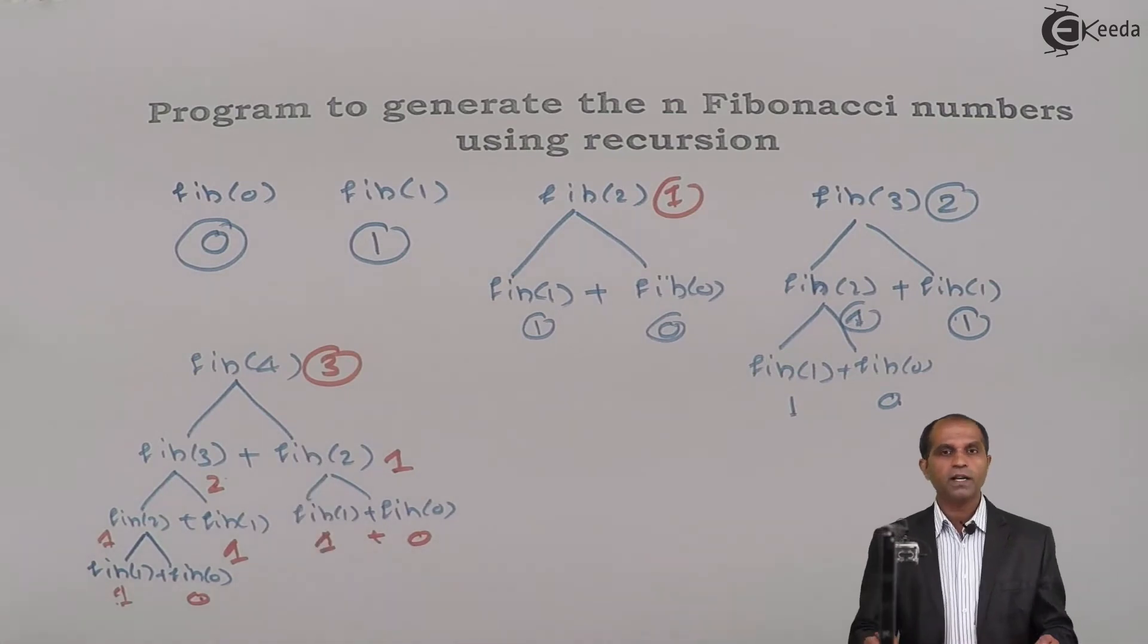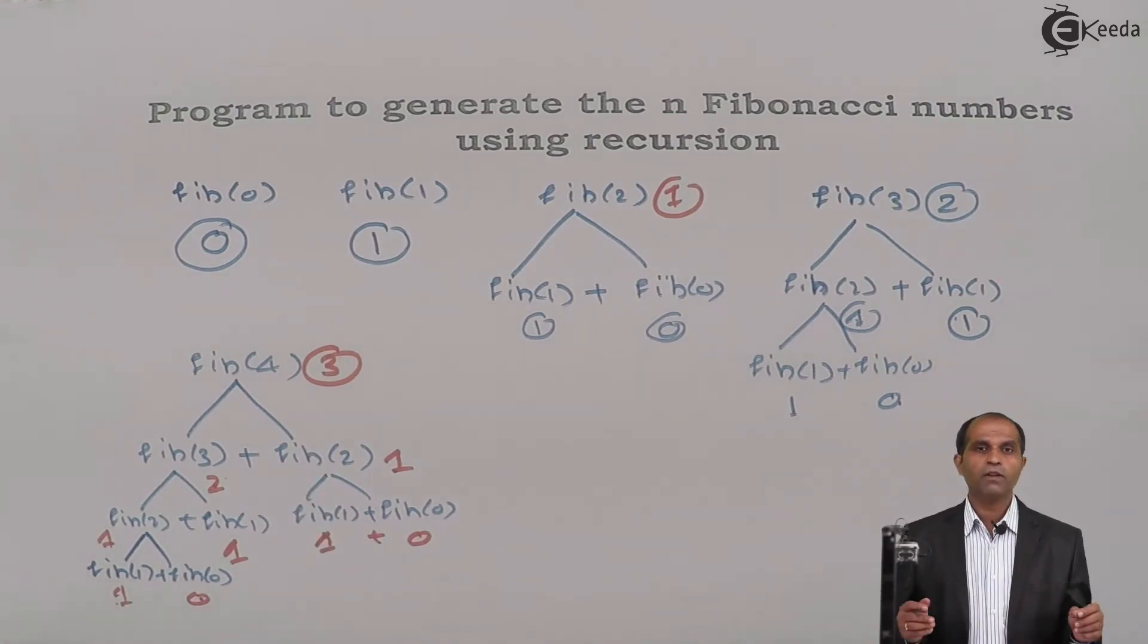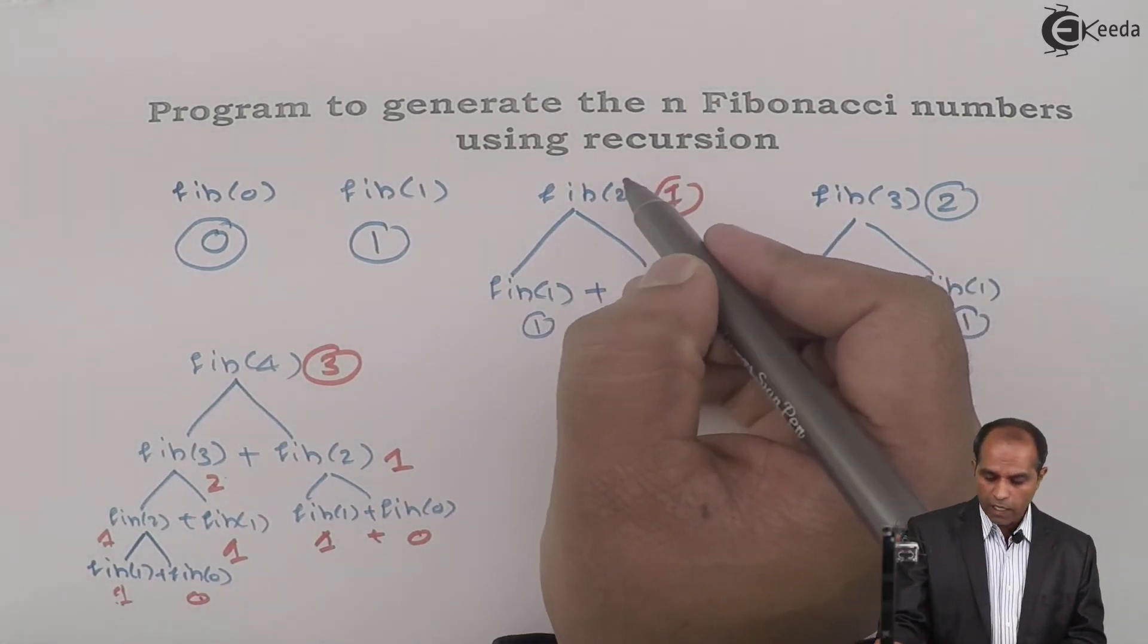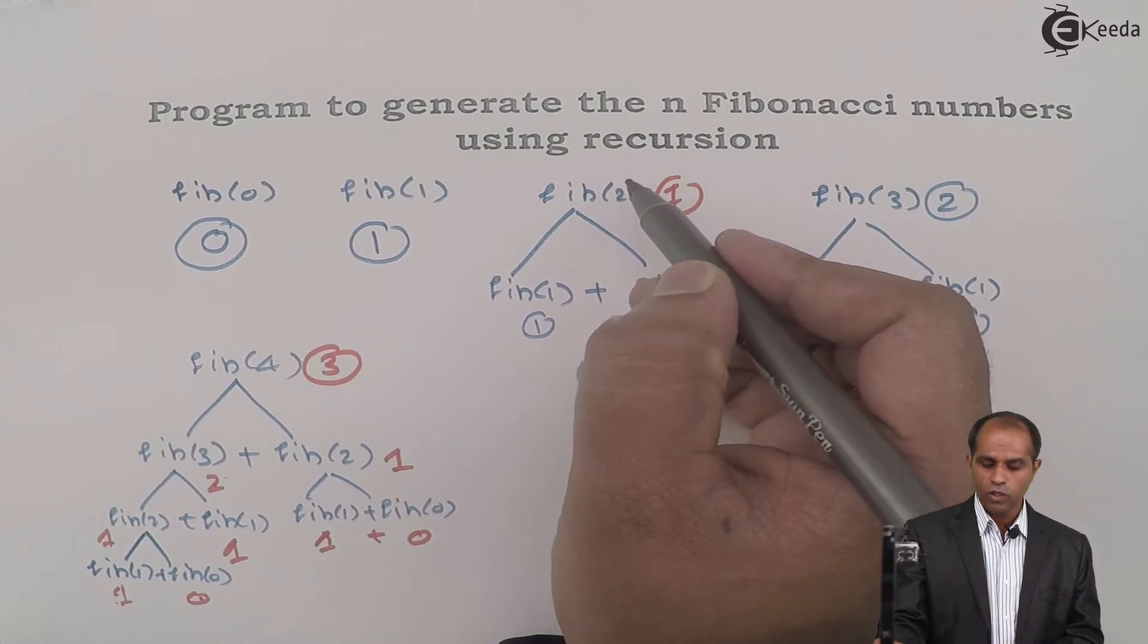We get this particular value. You can keep on expanding this particular tree to any level of your choice. Simple way to analyze: when I ask you to find Fib of n, when I give you a value n, what you'll do?